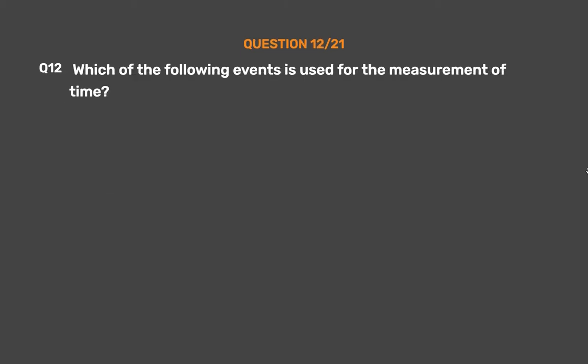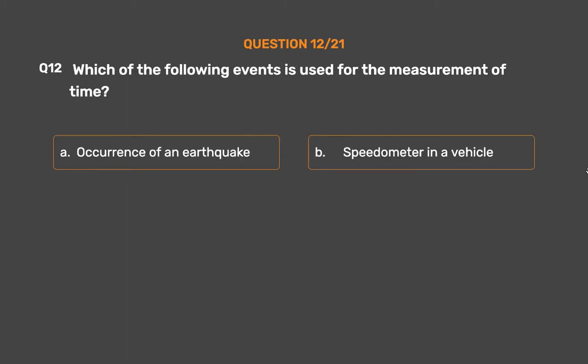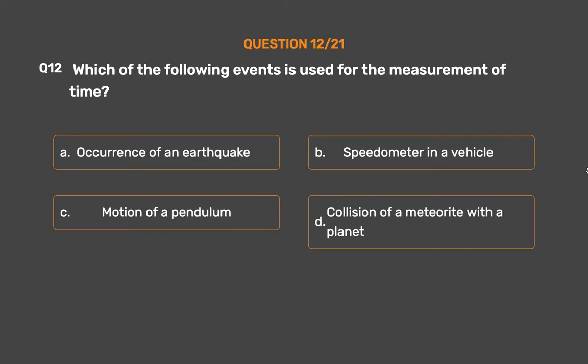Question No. 12. Which of the following events is used for the measurement of time? Option A: Occurrence of an earthquake. Option B: Speedometer in a vehicle. Option C: Motion of a pendulum. Option D: Collision of a meteorite with a planet.